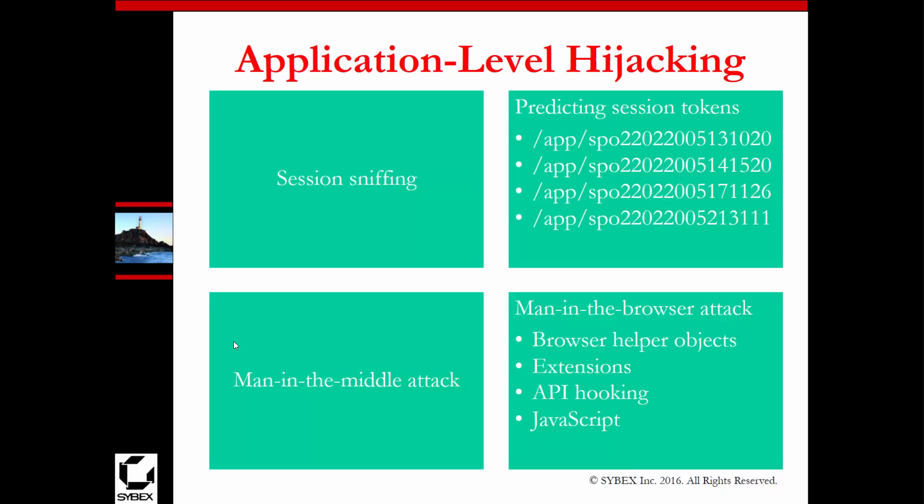You can also perform man-in-the-middle attacks. This can be done through browser helper objects, extensions, API hooking, JavaScript, or ARP poisoning. ARP poisoning is a bit more involved but is a significant technique that is not talked about often enough.